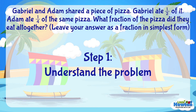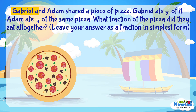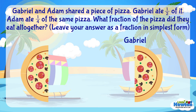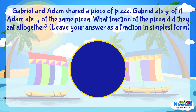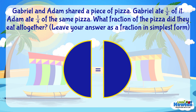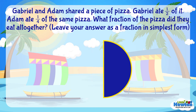Let's break down the question and understand it. Gabrielle and Adem shared a piece of pizza. Gabrielle ate one half of it. Let's use a circle to represent the pizza. Now let's cut the circle with a line down the center. This divides the pizza into two equal parts. One part out of the two parts makes up the whole pizza — this represents the one half that Gabrielle ate.